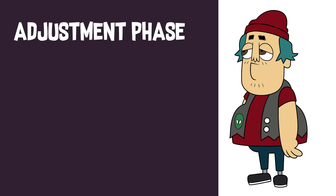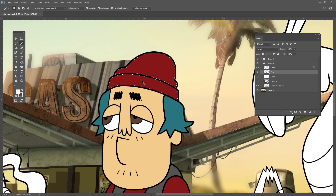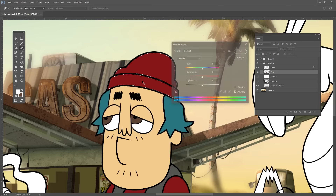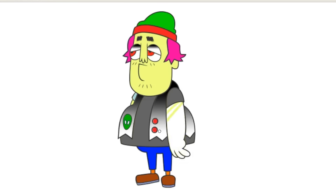From this base, I can adjust these colors individually to anything I want. In digital art, you're never tied down to anything you place. Just select your color, hit Ctrl+U, and then you can play with the hue sliders.